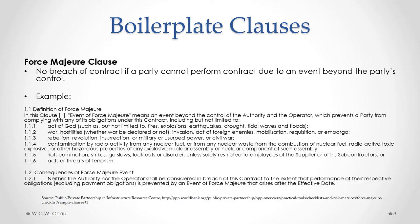One type of boilerplate clause is called a force majeure clause. This type of clause essentially says that there is no breach of contract if a party cannot perform a contract due to an event beyond the party's control. Such an event would usually be what's called an act of God, like a storm, a tornado, an earthquake, or other events that are outside the party's control.